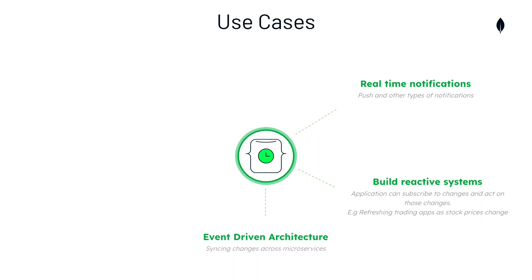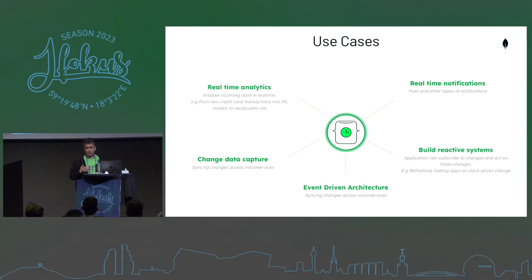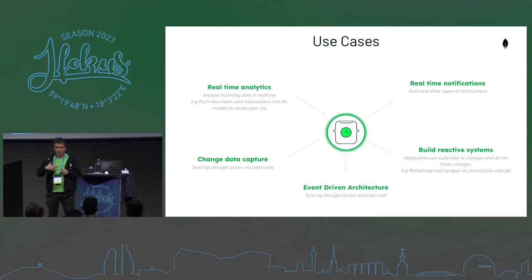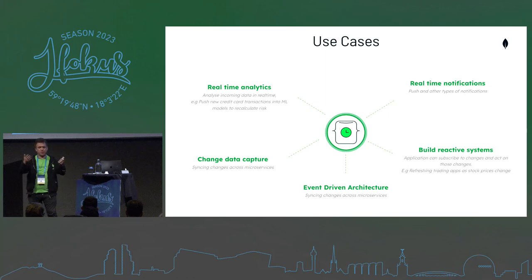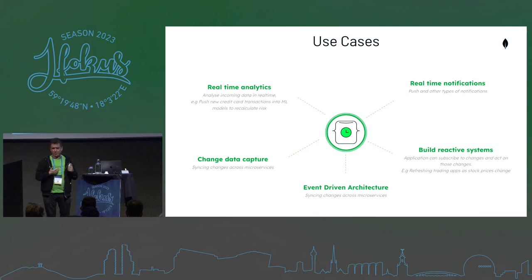We can also do event-driven architectures, having microservices listening to each other's data changes. And CDC — when you have two data sources that need to sync, change data capture can be done with change streams. Real-time analytics is really interesting too: if you do a payment with your card and want to analyze it in real-time, maybe applying a machine learning model to understand if a transaction is fraudulent. I'll use AWS Comprehend to analyze the text you submit and determine if it's positive or negative feedback. AWS Comprehend is a service from AWS for exactly that.